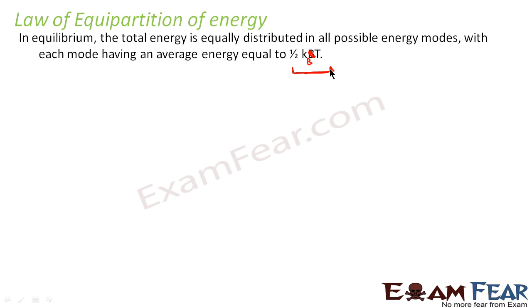That means when I talk of translational mode, it should have an average energy equal to half kB T. That is, each translational degree of freedom should have half kB T, each rotational degree of freedom should have half kB T. That is, each translational degree of freedom should contribute half kB T.